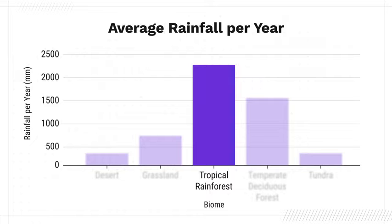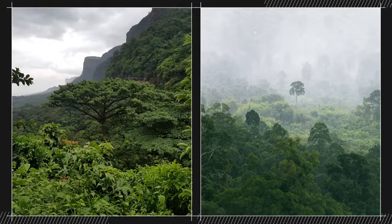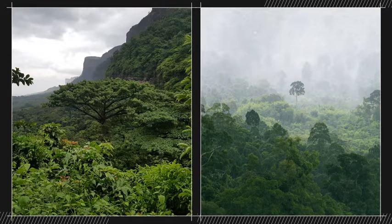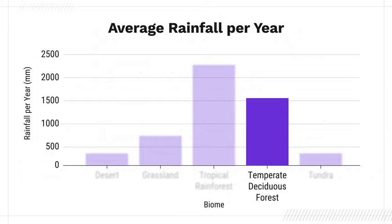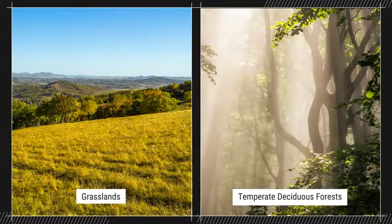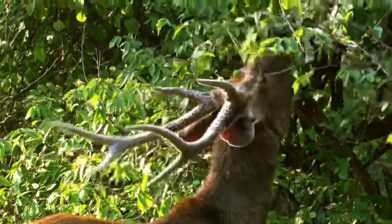An area with lots of rainfall can support lots of plants that need lots of water. All tropical rainforests — whether in Africa, Asia, or another continent — have similar rainfall and, as we saw before, similar temperature patterns. Temperate deciduous forests have more rainfall than grasslands, which allows tall trees that need more water to grow. The grasses and shrubs of the grassland don't need as much rainfall.